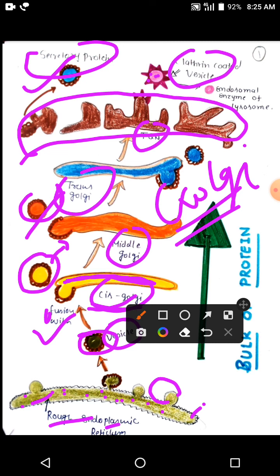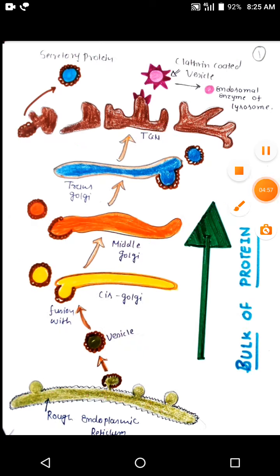This is called the bulk flow of a protein. Now you are clear about how can the transport of our protein work.